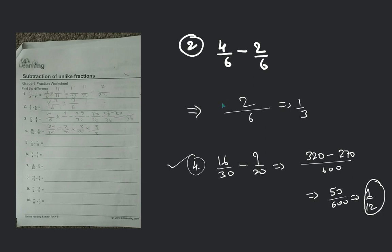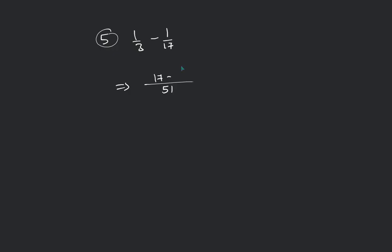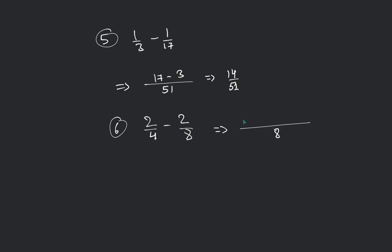5th question: it is asking 17 minus 3, that will be equal to 14 by 51. Number 6: 2 by 4 minus 2 by 8. We take the LCM — LCM will be 8 — and that will be 4 into 2, giving 2 by 4 minus 2, which is basically 2 by 8 or 1 by 4. 1 by 4 will be your final answer.